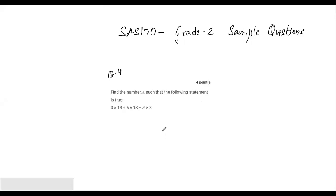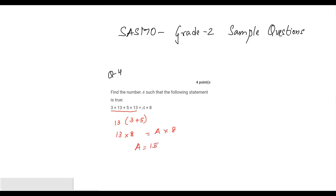Let's read question four: find the number A such that the following statement is true. We can use the distributive property of multiplication. 13 is common from both terms, so we factor it out: 13 times 3 plus 13 times 5 equals 13 times (3 plus 5), which is 13 times 8. So A equals 13, and the answer is 13 into 8 equals 104, so the value of A is 13.